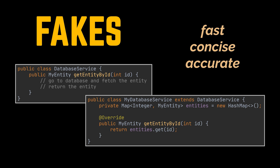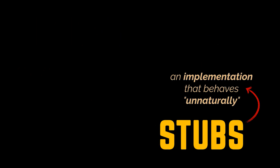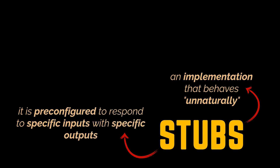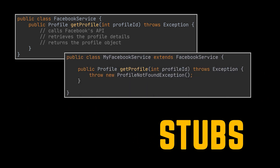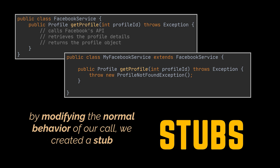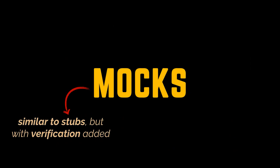A stub is an implementation that behaves unnaturally — it is pre-configured to respond to specific inputs with specific outputs. The purpose of a stub is to get your unit under test into a specific state. For example, if we are writing a test for code that interacts with a certain API, we could stub that API with one that always returns the same response. Our original call is not meant to return the same result regardless of input, so by modifying its normal behavior, we've created a stub.